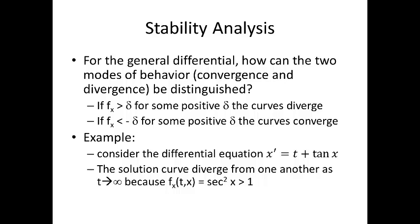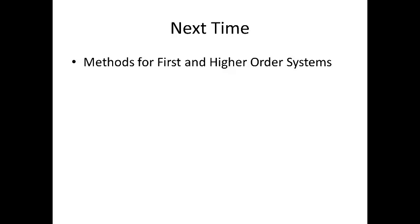So, consider the differential equation x prime is equal to t plus tangent of x. The solution curves diverge from one another as t goes to infinity, because the partial derivative of f with respect to x is secant squared x, which is actually greater than 1. So, next time we'll take a look at methods for first and higher order systems.